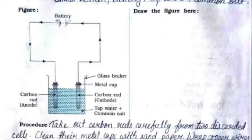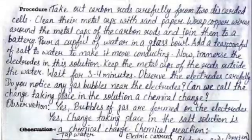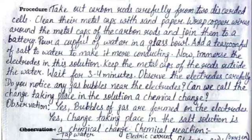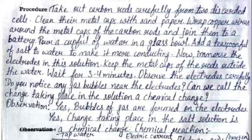The procedure: Take out carbon rods carefully from two discarded cells. Clean their metal caps with sandpaper. Wrap copper wires around the metal caps of the carbon rods and join them to a battery. Pour a cup full of water in a glass bowl and add a teaspoon full of salt to make it more conducting.